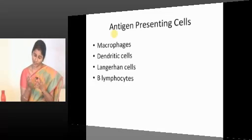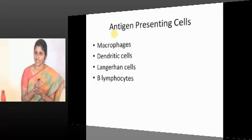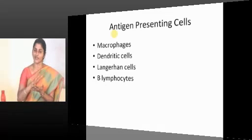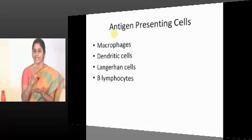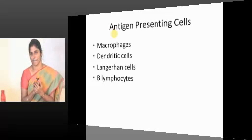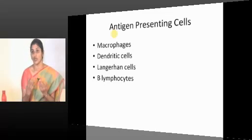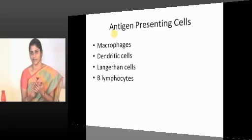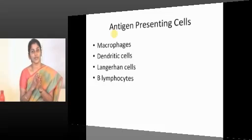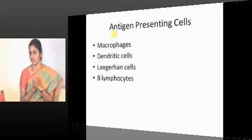Coming to antigen presenting cells — by presence of their receptors, they identify the antigen. Of course there should be some set of receptors. These receptors are becoming very popular now, like in one of the high yield areas.